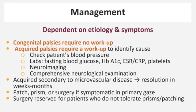Let's briefly discuss how we would manage a patient with a paretic superior oblique muscle. Treating this condition is largely dependent on etiology. If we're able to confirm that the patient's palsy is congenital, then no further workup is indicated. If the palsy is acquired, then we must perform a workup to identify the cause. The first step would be to check the patient's blood pressure and order labs: fasting blood glucose, hemoglobin A1c, ESR, CRP, and platelets — the first two will help rule out diabetes, and the last two will help rule out giant cell arteritis. Neuroimaging is indicated to look for a mass lesion or signs of demyelinating disease. A complete neuro exam should also be performed. Palsies due to microvascular disease often resolve without treatment in weeks to months. If patients are symptomatic, an eye patch, glasses with prisms, or surgery can be considered. However, surgery is often a last resort and is typically reserved for patients who cannot tolerate prisms or patching.